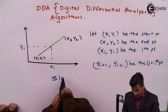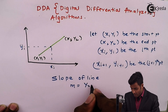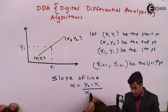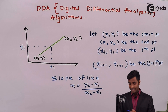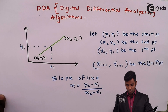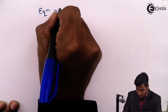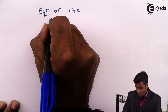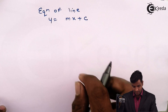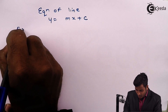We know that slope of line M is equal to (y2 minus y1) upon (x2 minus x1). The equation of line is represented accordingly. This is the equation of line.